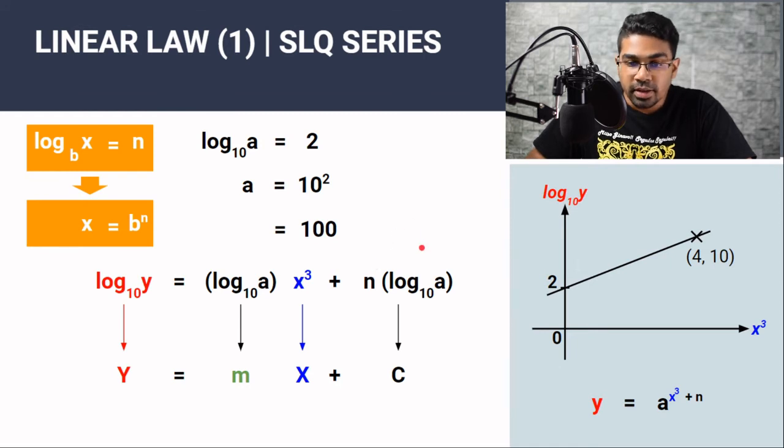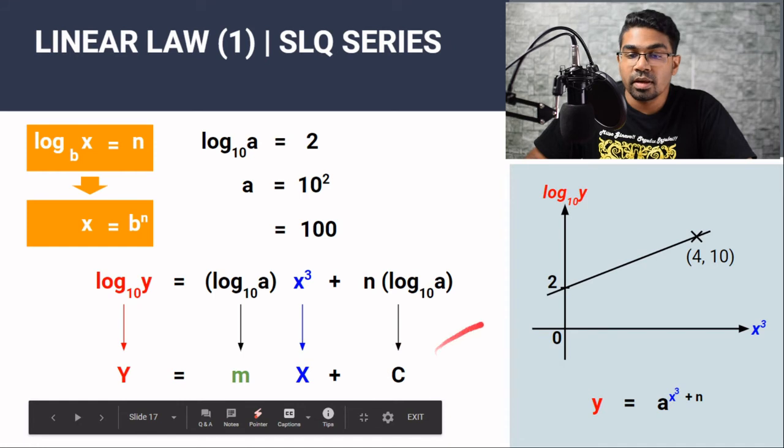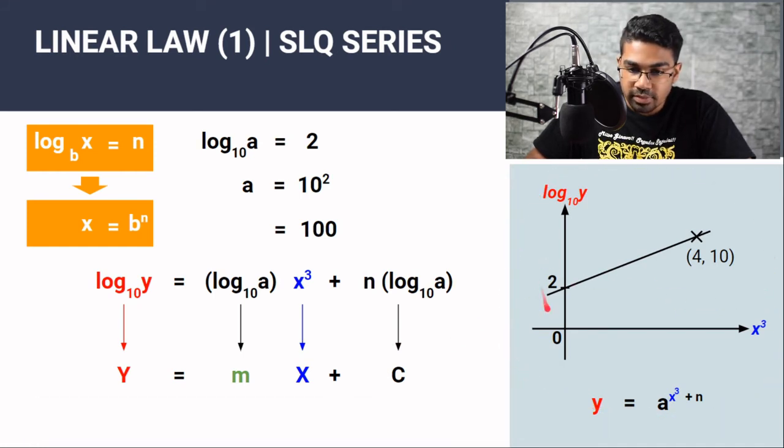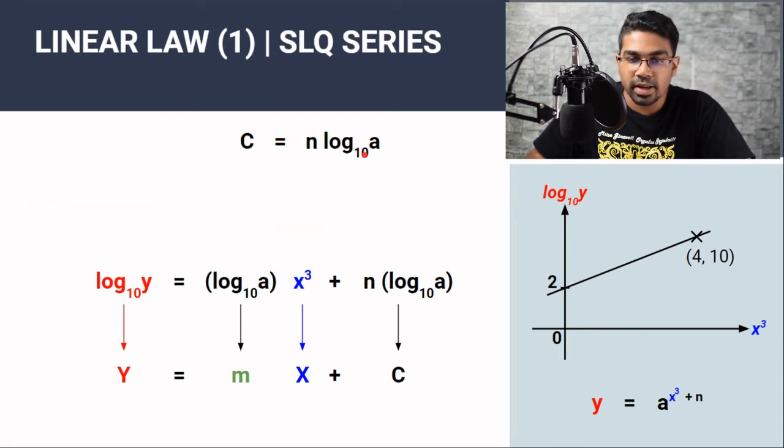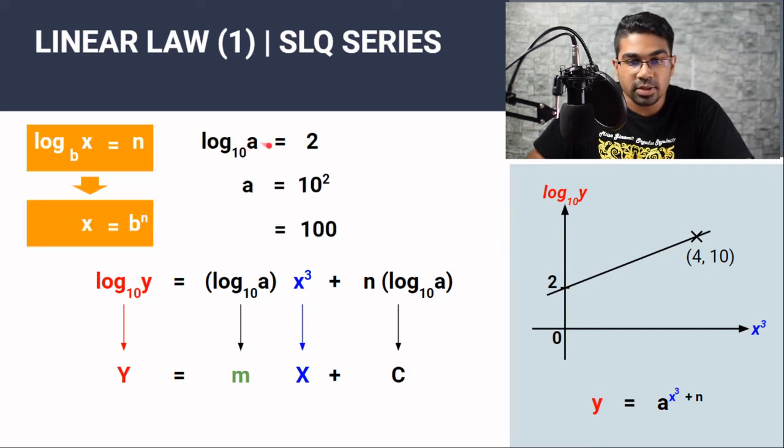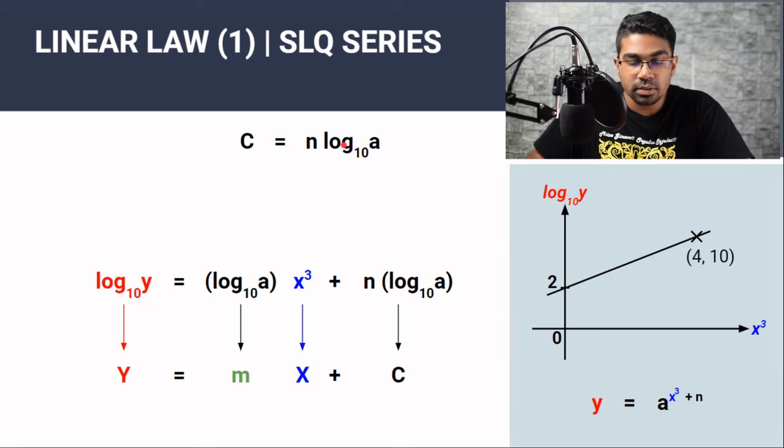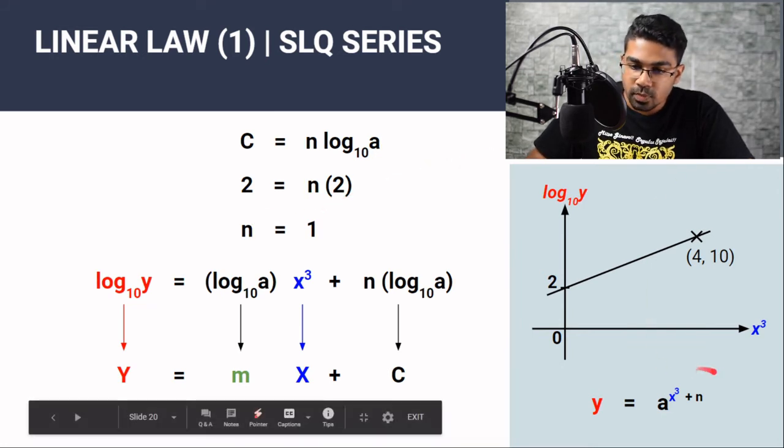Now we need to find the value of n. By comparison, n log₁₀a should be the y-intercept. And from the graph that is given to us, we can tell right away that the y-intercept here is 2. So we have c equals n log₁₀a. We already know the value of c is 2. We also know log₁₀a from earlier. From earlier, we found that log₁₀a equals 2. So when we substitute those values in, we have 2 equals n times 2. And when we make n the subject of the equation and divide both sides by 2, then we get n equals 1.